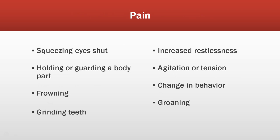Pain is the unpleasant sensory and emotional experience associated with actual or potential tissue damage. Pain is whatever the experiencing person says it is, existing whenever they say it does. Alert residents are asked to rate their pain on a scale of 0 to 10, where 0 is no pain and 10 is the most intense pain. Residents with cognitive impairment may use the FACES scale, which uses faces ranging from very smiley and happy to very distressed and crying.